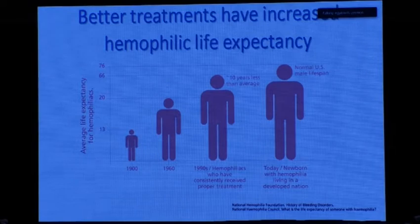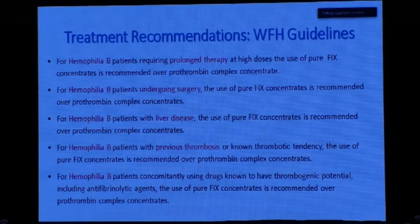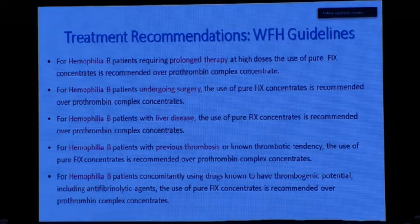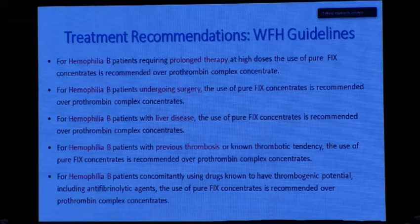Regarding the World Federation guidelines for treating Hemophilia B — from the 2020 guidelines — prolonged therapy at high dose is required. Pure recombinant Factor IX is recommended over aPCC. For Hemophilia B undergoing surgery, Factor IX is recommended over PCC. For Hemophilia B with liver disease, pure Factor IX is recommended over PCC. And for Hemophilia B with previous thrombosis, the use of Factor IX is also recommended.